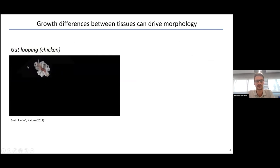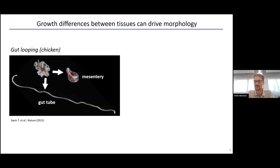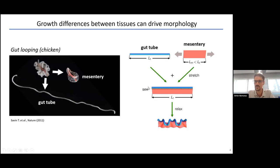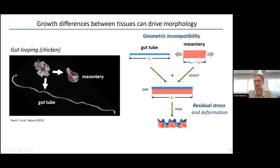When you dissect the chicken, the gut will be compact and wiggly. But a skilled person can dissect the gut, which consists of two tissues — the gut tube and the mesentery — and you can see they are of completely different sizes. The gut tube is much longer than the mesentery, which is called geometric incompatibility. To make them into a coherent structure, you stretch the mesentery, sew it with the gut tube, and upon release, the structure relaxes and forms the wiggly gut, at the cost of residual internal stress.